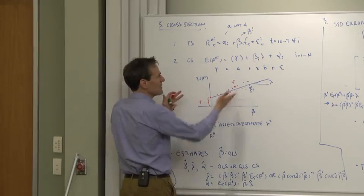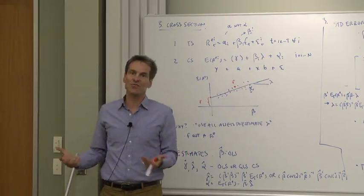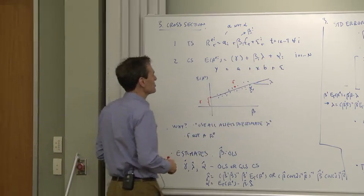That's what we're looking for: expected returns on betas, and alphas are the errors. Why not just run that as a regression? Kind of a natural idea.